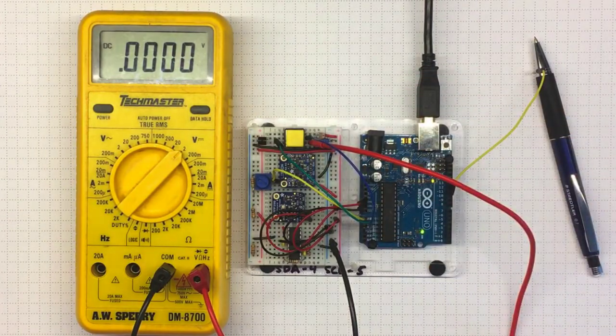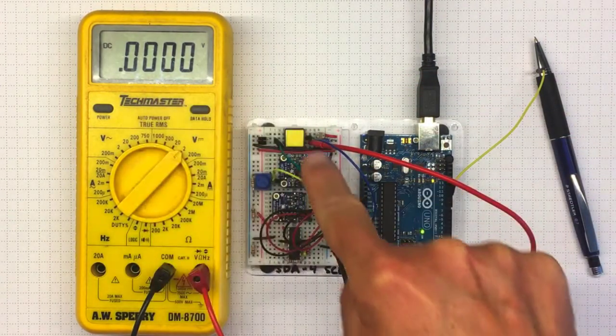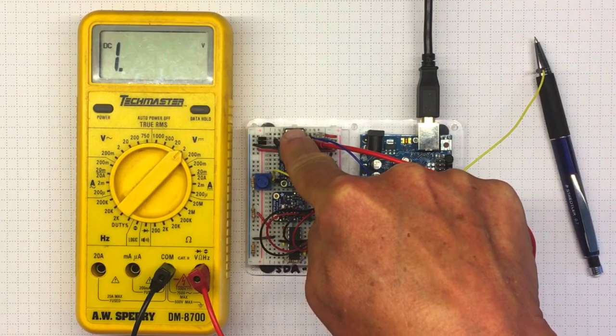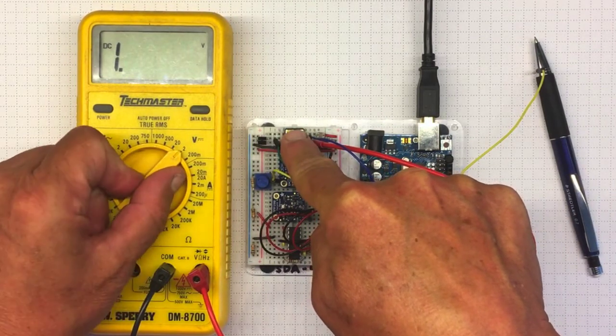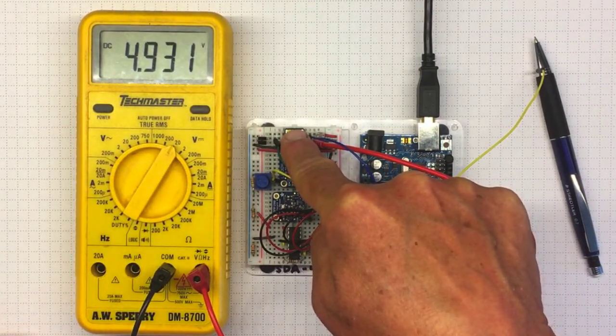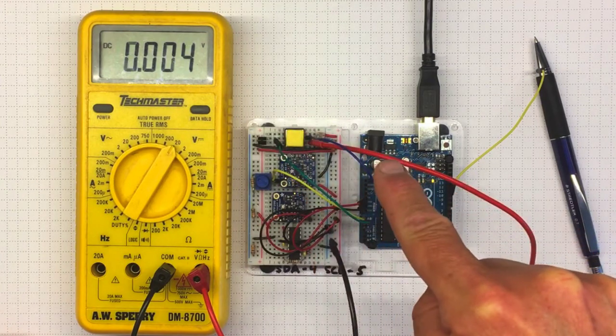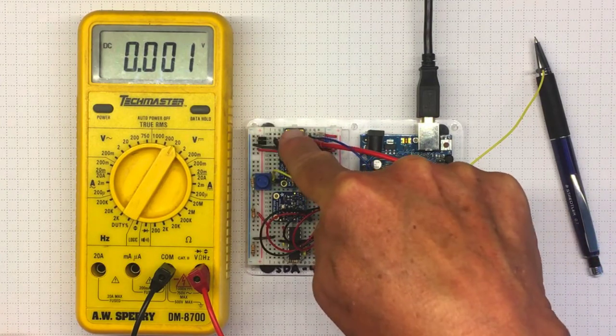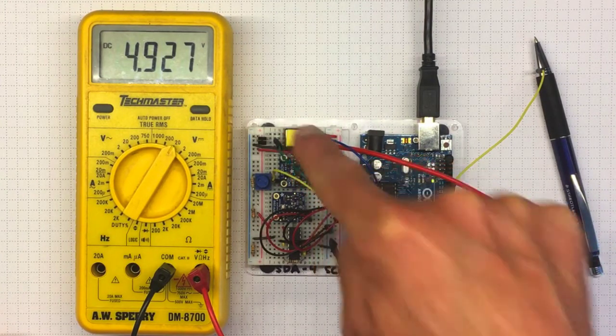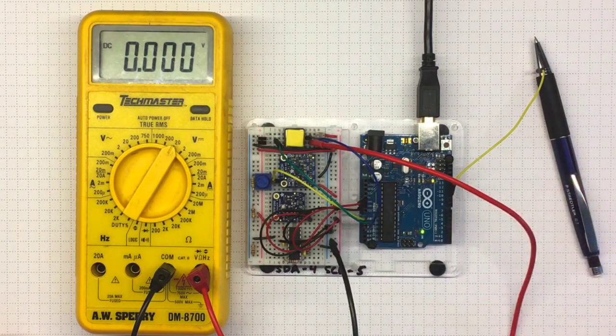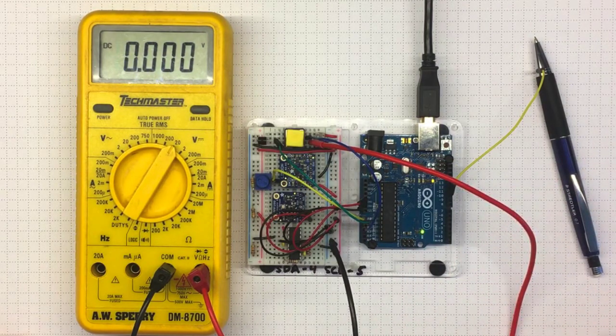So if I plug in there, I'm showing zero volts, but if I push the button, whoops, need to change range, I'm getting five volts. Back to zero, up to five. Those are my only two choices with an on-off push button with a digital signal.